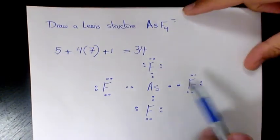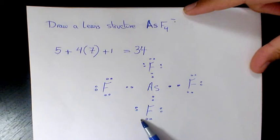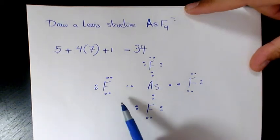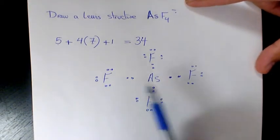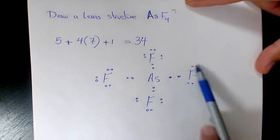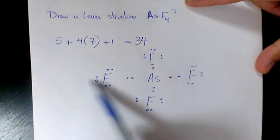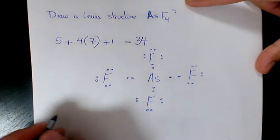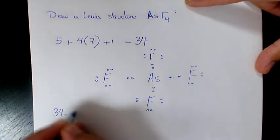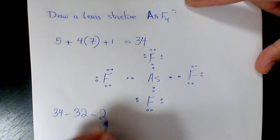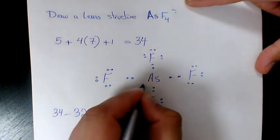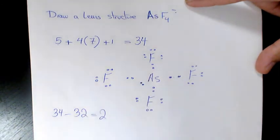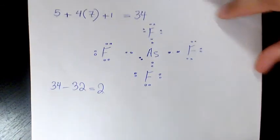As you can see, each fluorine follows the octet rule. Now we count how many electrons we've used: each fluorine has four pairs, so four times eight is thirty-two electrons used. Thirty-four minus thirty-two gives us two electrons remaining, which we place on the center atom.